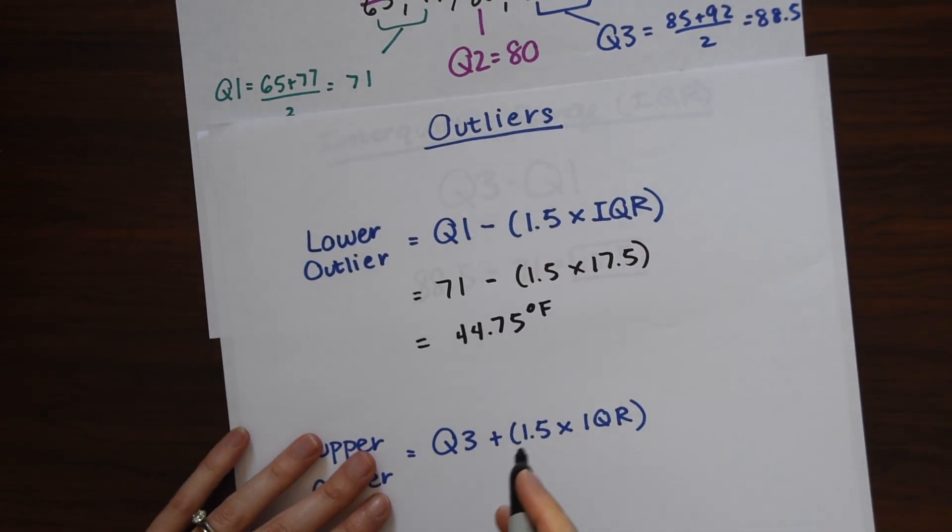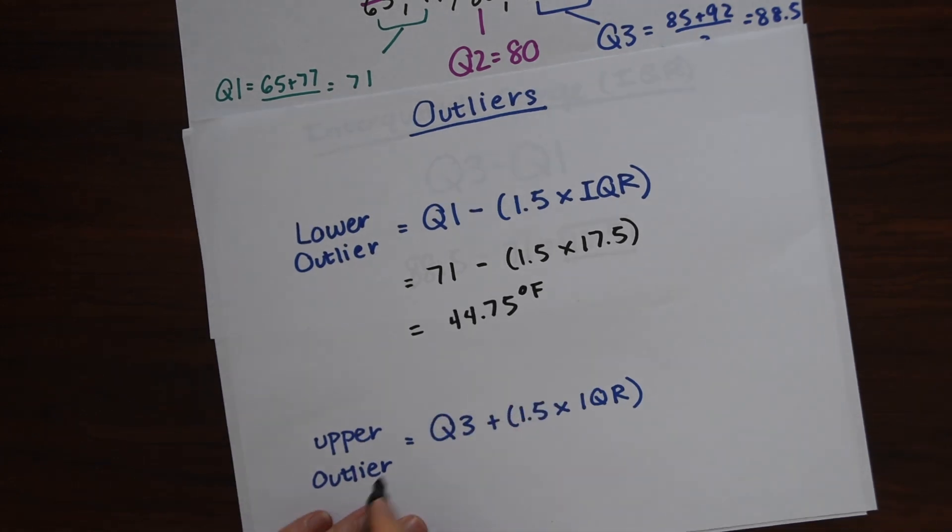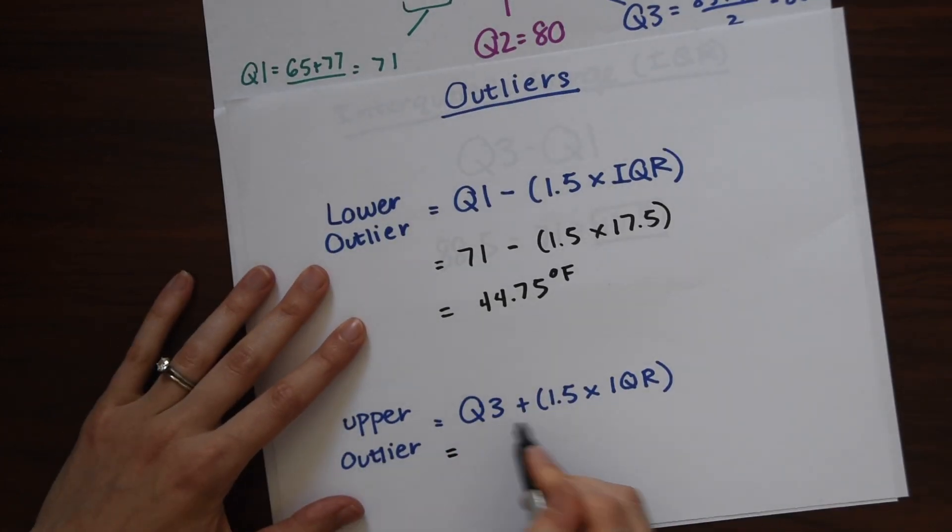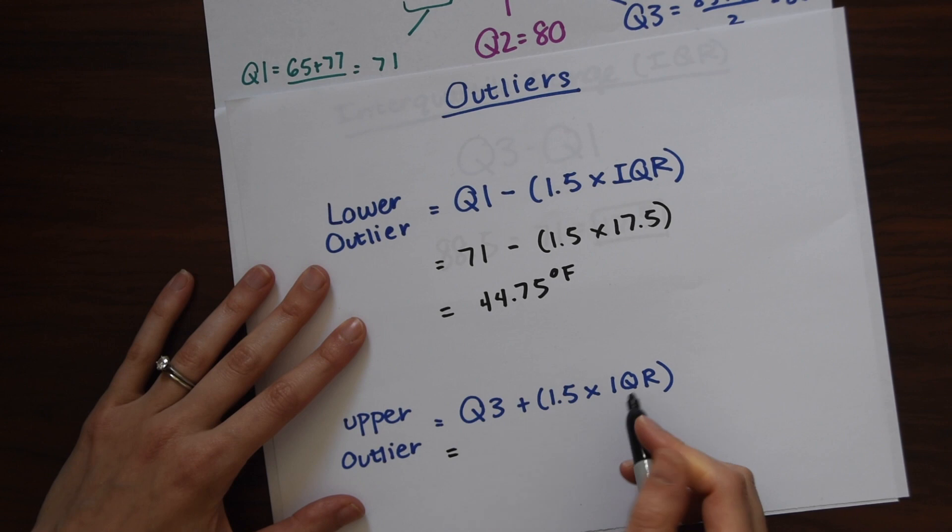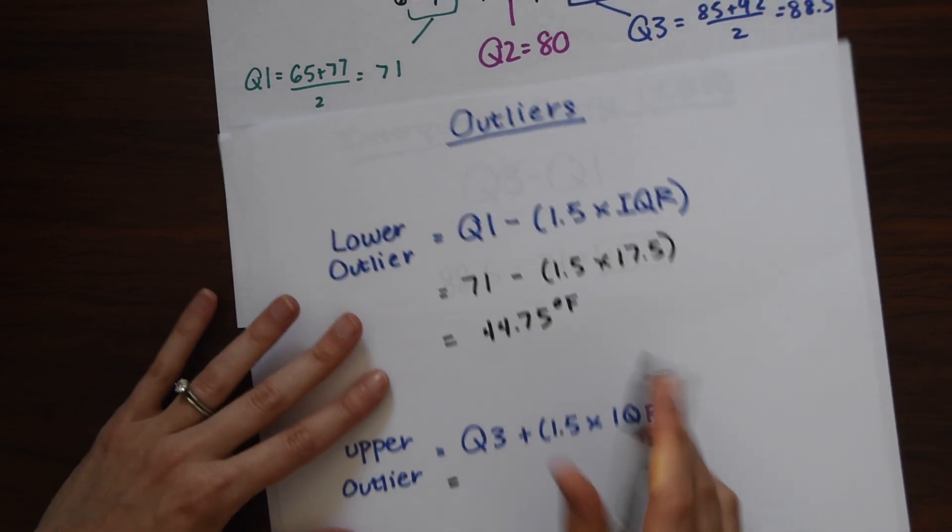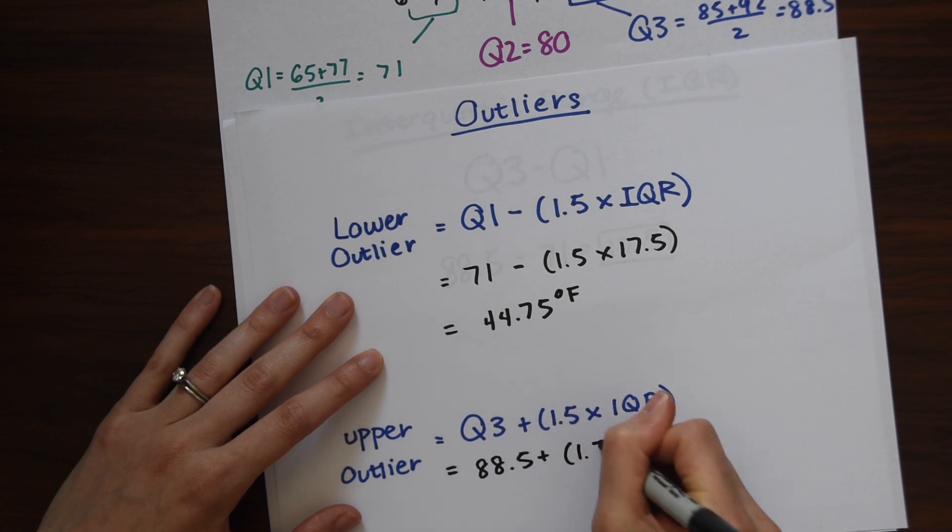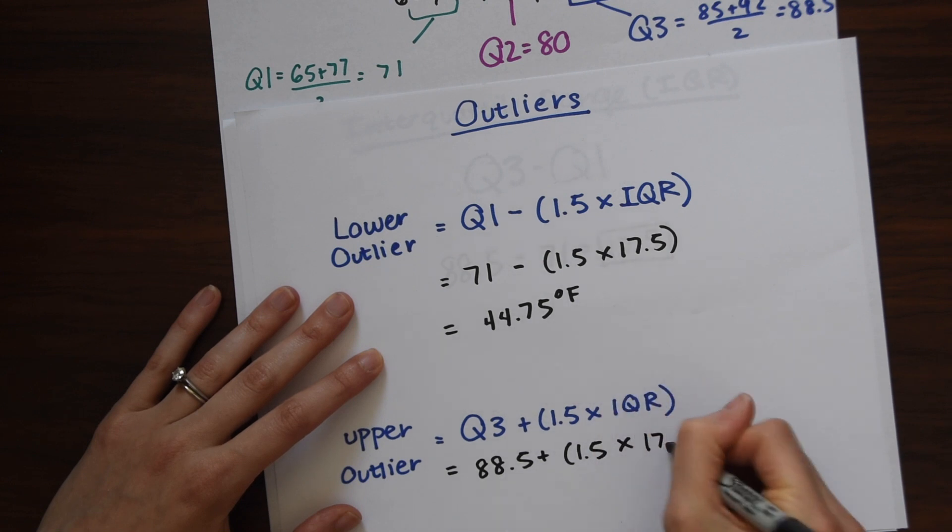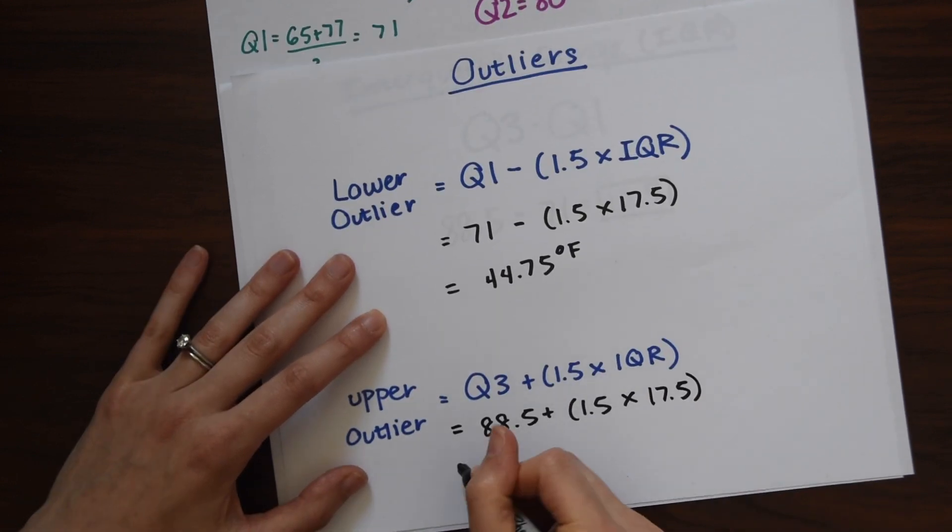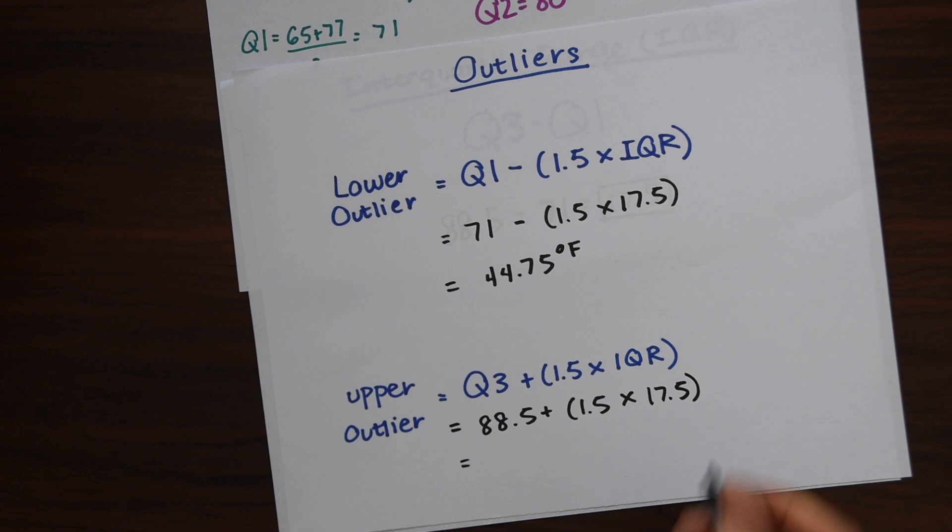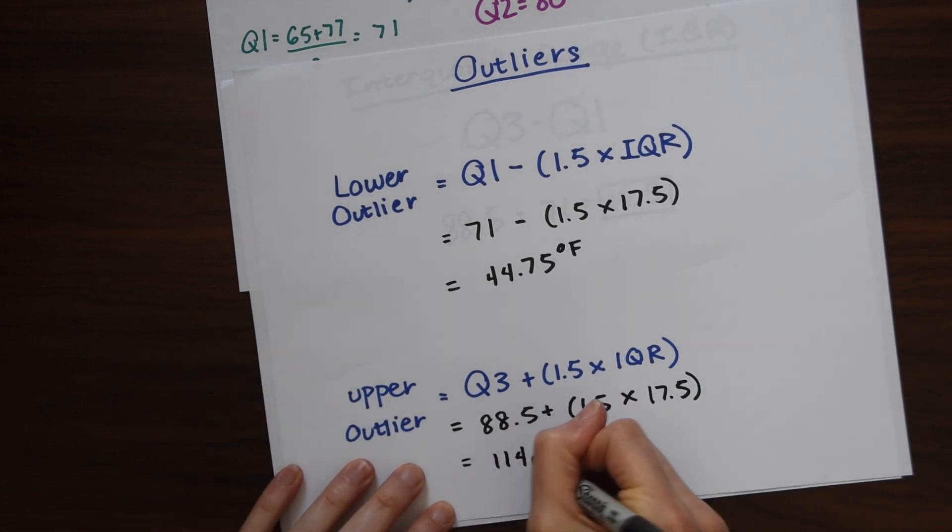And now let's find the upper quartile, which is quartile 3 plus 1.5 times the interquartile range, IQR. So we have quartile 3 is 88.5 plus 1.5 times the interquartile range, 17.5. So if we plug this into our calculator, we're going to get 114.75 degrees Fahrenheit.